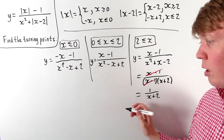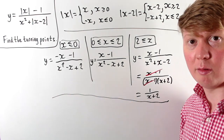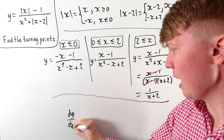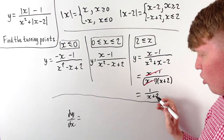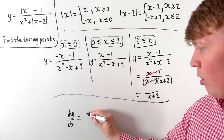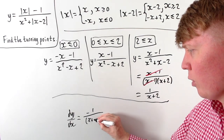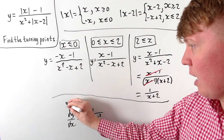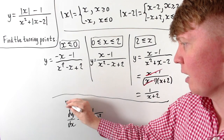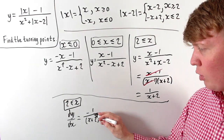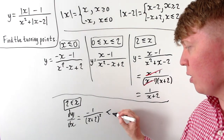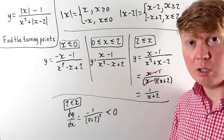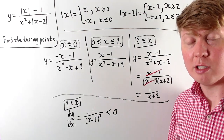To find turning points we set dy/dx equal to 0. Differentiating 1 over x plus 2 — using the chain rule, thinking of it as (x+2) to the power of negative 1 — gives dy/dx equals negative 1 over (x+2) squared. Since we're dividing by a square, this is always less than 0 for x greater than or equal to 2, so there are no turning points in that region.